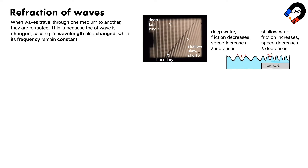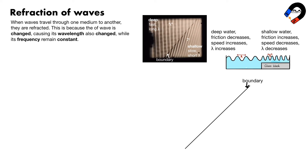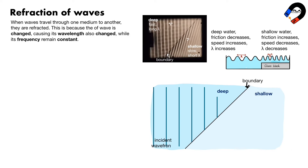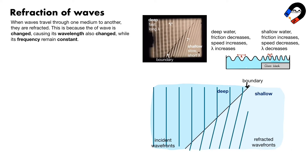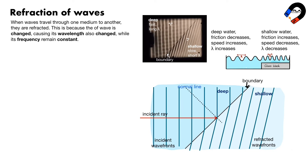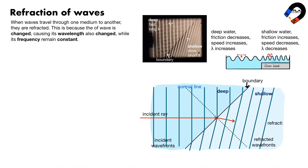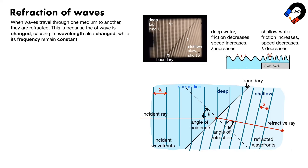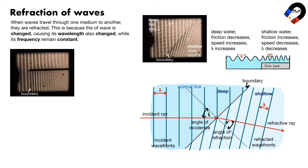To draw the diagram of refraction of waves: identify the boundary between shallow and deep water. Draw the incident wave fronts in deep water and the refracted wave fronts in shallow water. Draw the incident ray perpendicular to the incident wave fronts and the normal line perpendicular to the boundary. Draw the refracted ray perpendicular to the refracted wave fronts. The angle of incidence I is between the incident ray and the normal line. The angle of refraction R is between the refracted ray and the normal line.